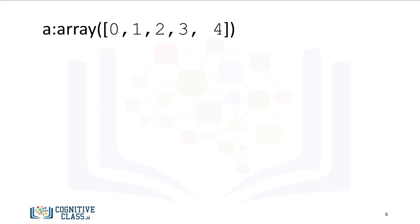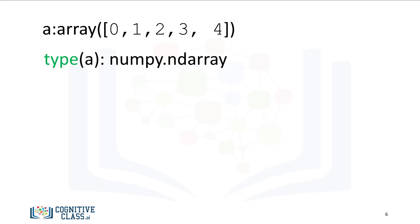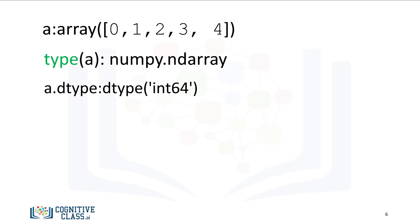We can cast a list to a NumPy array by first importing NumPy, then casting the list. If we check the type of the array, we get NumPy.ndArray. As NumPy arrays contain data of the same type, we can use the attribute dtype to obtain the data type of the array's elements, in this case a 64-bit integer.